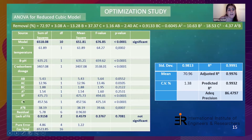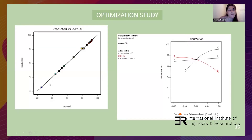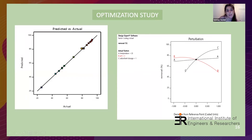In the graph, predicted and actual values fall on the same linear line, confirming accuracy. As shown on the right side, A is temperature, B is pH, and C is adsorbent dosage. The most effective process parameters are pH and adsorbent dosage, while temperature is not very effective. For the highest removal, pH should be lower and adsorbent dosage should be higher.